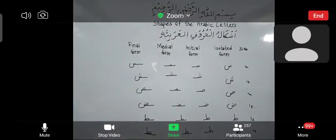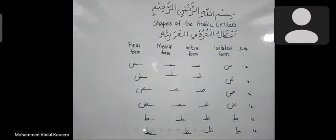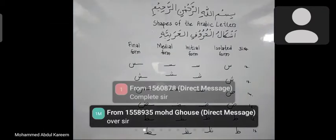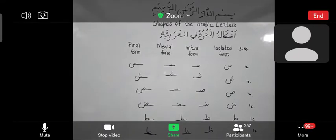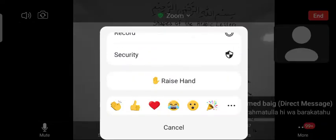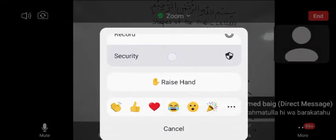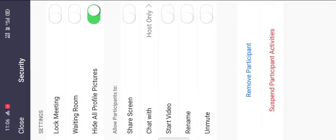Now here you can observe the next set of letters: sin, shin, swad, zawad, taw, and zaw — with their different forms shown here.